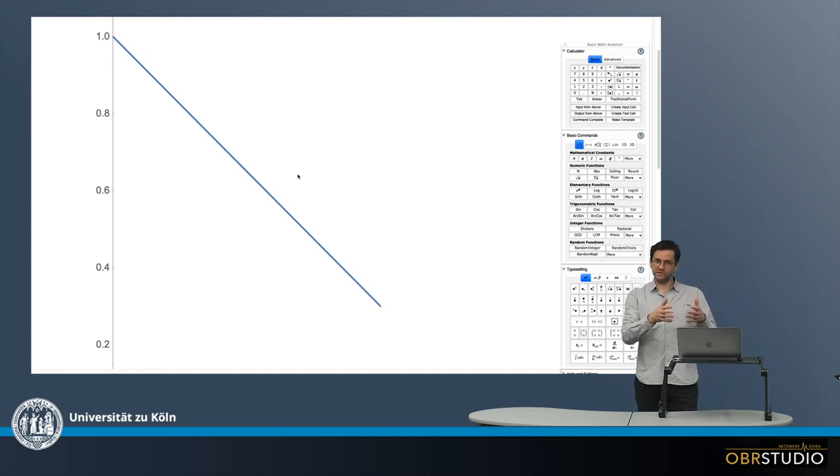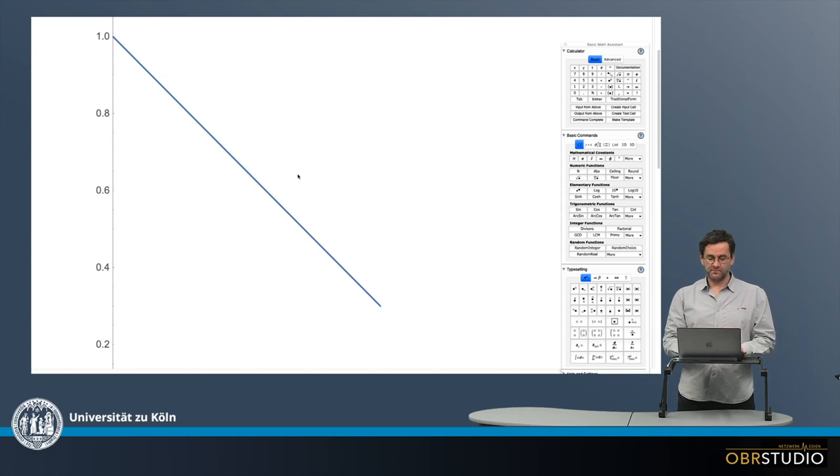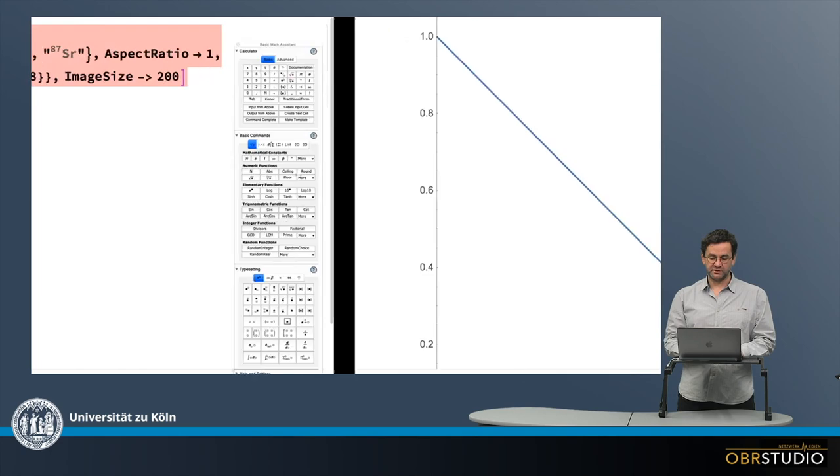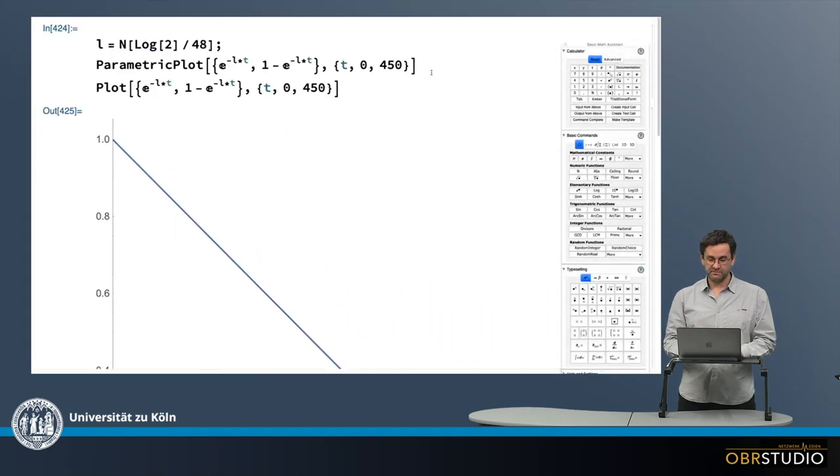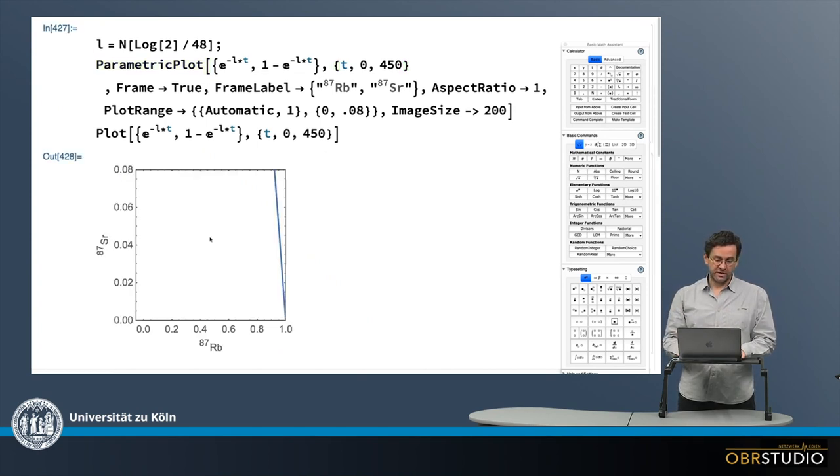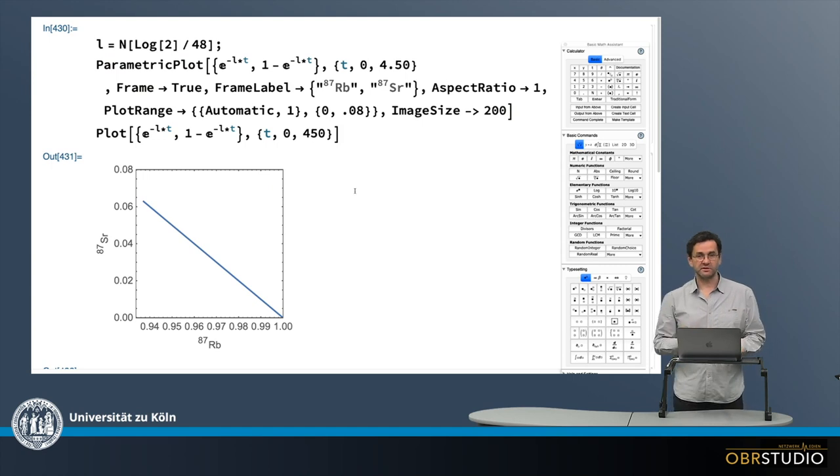And here we have the isochron plot. It might not look very much as an isochron plot right now, but in essence, this is the isochron plot. Now to make this a little bit more clear, I prepared a couple of format changes to the plot, which I will apply. It's the same plot, it's just changing the axis sizes, the size of the axis, the aspect ratio and so on. And then we have the same plot here. Now this is still up to 450 billions of years. So I quickly change this. Now this is the plot here.